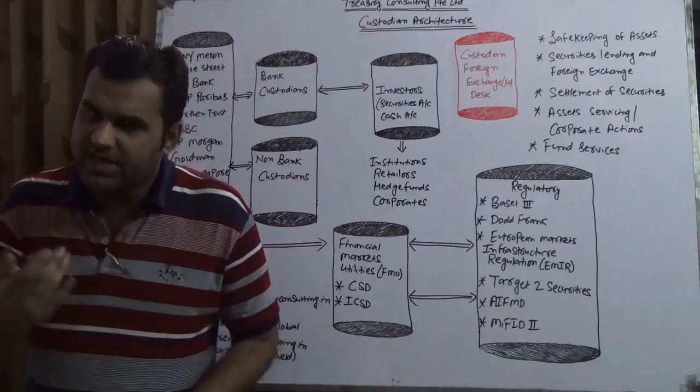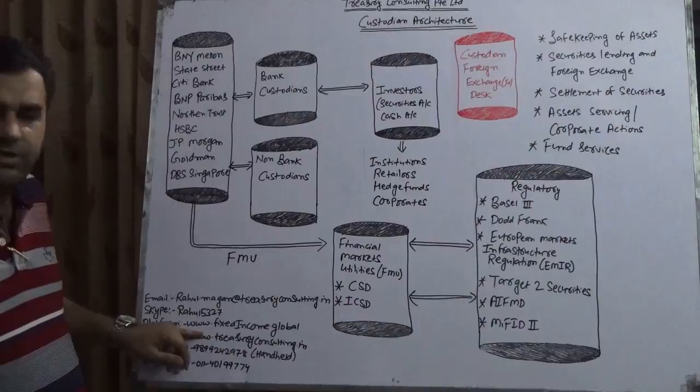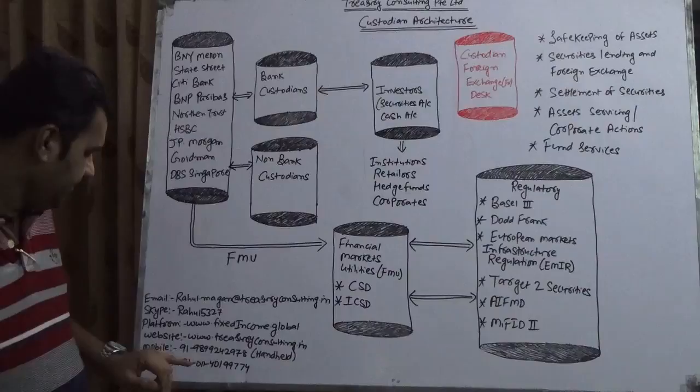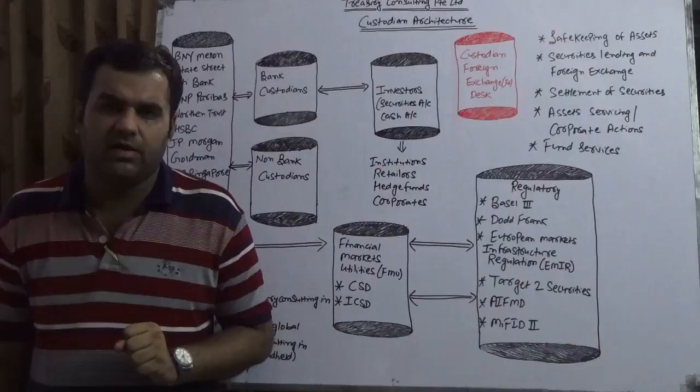In case you have any questions, my email is rahul.magan@treasuryconsulting.in. My Skype is rahul5327. My platform is www.fixedincome.global. Website is www.treasuryconsulting.in. Mobile is 9899242978, and our KPO number is 0114019774. Thank you and have a great day ahead. Enjoy your day. This is Treasury Consulting. Thank you.